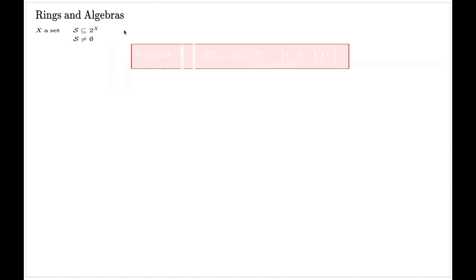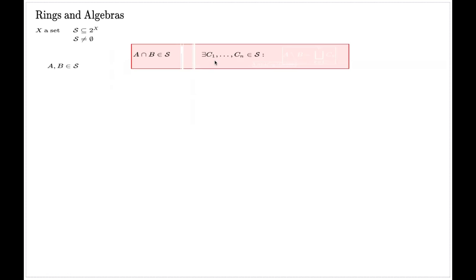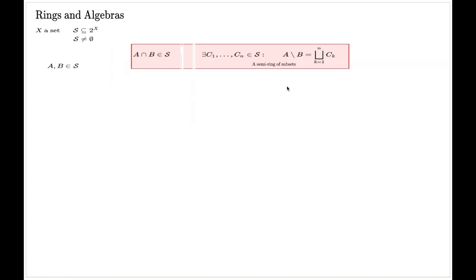The first set of properties I require for S is: if I have two subsets which belong to S, then the intersection of these two belongs to S, and also there is a finite number of elements of S — call them c1 through cn — such that the set difference is given by the disjoint union of these c's. If my collection S satisfies these two properties — intersection is in S, and set difference is represented as a finite disjoint union of elements of S — then S is called a semi-ring of subsets.